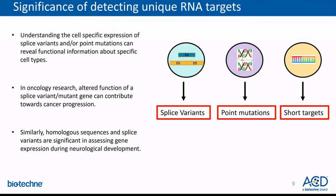Currently, the detection of unique RNA species can have significant pathological relevance. In oncology, slight variance and point mutations can dramatically alter the function of the target gene and in turn contribute to cancer progression. Similarly, several non-coding circular RNAs have been identified in the brain, but their particular role in neurological development is still unclear. Specific and sensitive detection of unique RNA targets such as splice variants, point mutations, and short or highly homologous transcripts can be challenging.